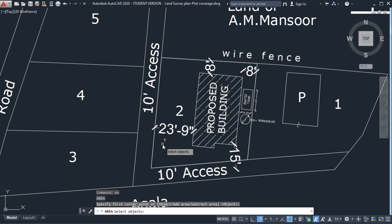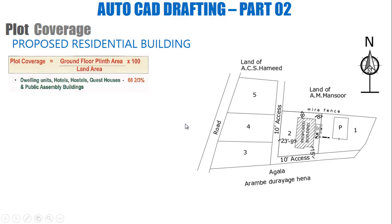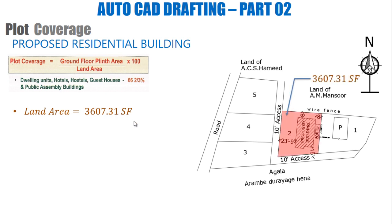Let's check that in the CAD file. Here I'll find the area of the land — that says 3,607.31 square feet. So the land area is 3,607.31 square feet. Let's highlight the same in the site plan: this area is 3,607.31 square feet.